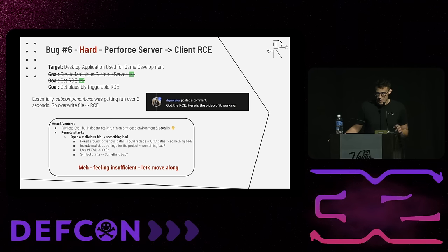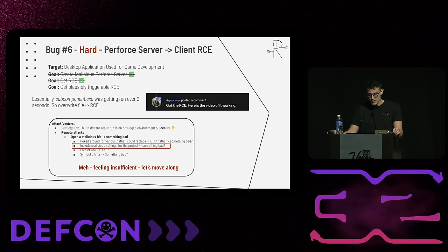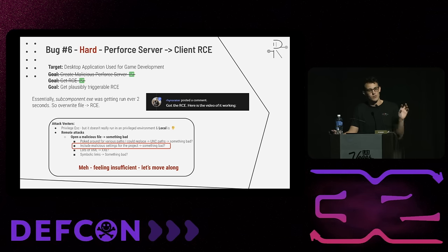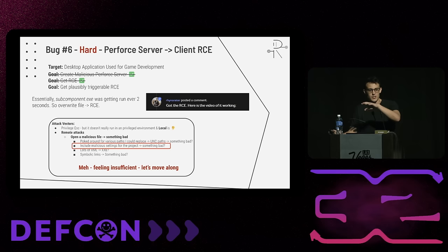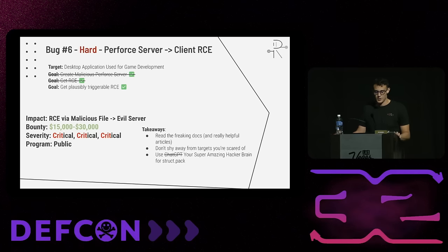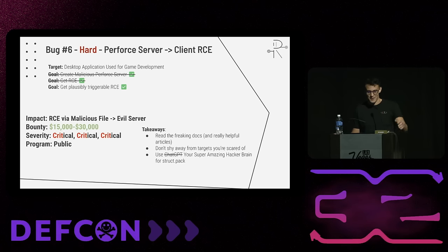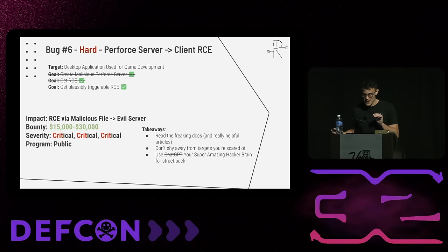That was 15 to 30K, critical, on a public program. Takeaways: read the docs and articles. Don't shy away from targets you're scared of, and use your amazing hacker brain for any struct.pack calls — or ChatGPT, whichever you're comfortable with.